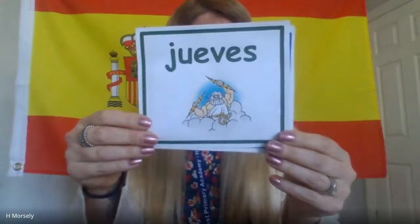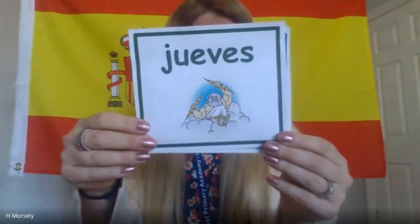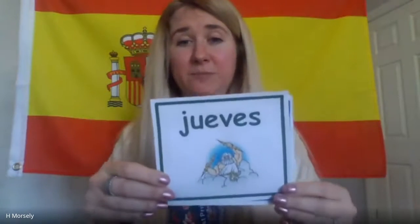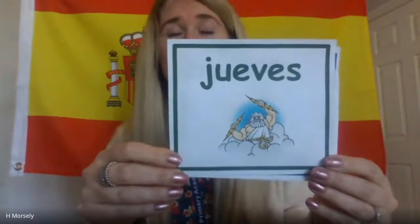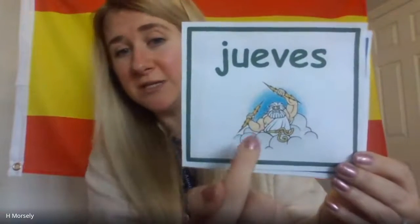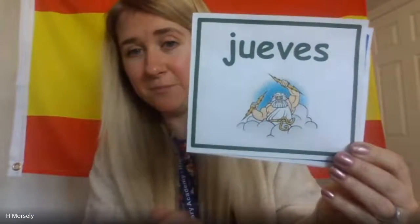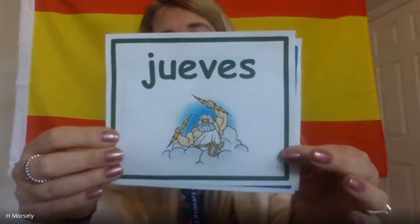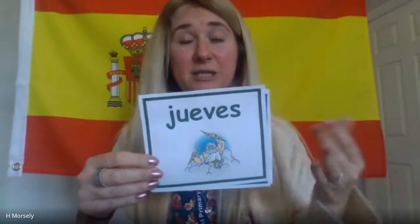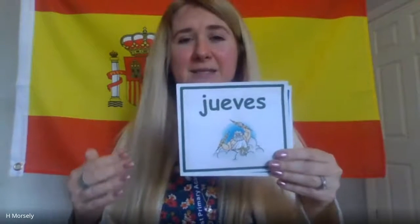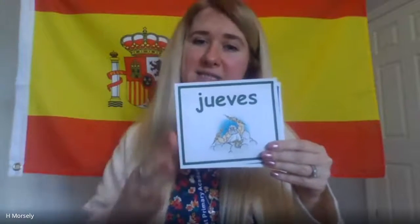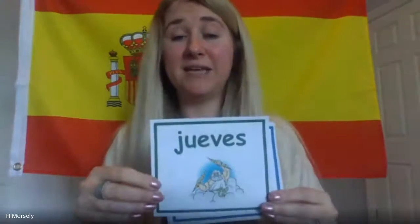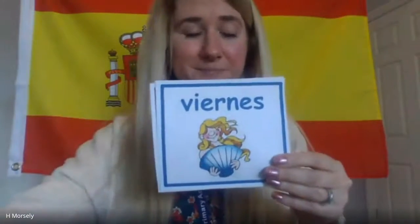Jueves — Thursday. Jueves is taken from the Roman god Jupiter — remember Jupiter is the Roman equivalent to the Greek god Zeus. He's holding lightning bolts. In Year Three you study Greek mythology, so you should remember that. Think of jueves as the planet Jupiter, and it also sounds like 'waves' to me — jueves. You say it: jueves.